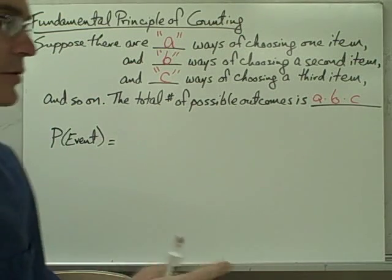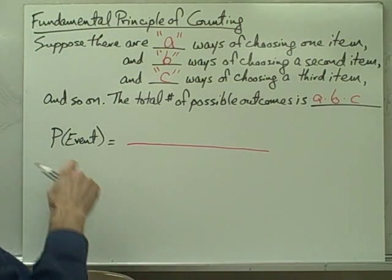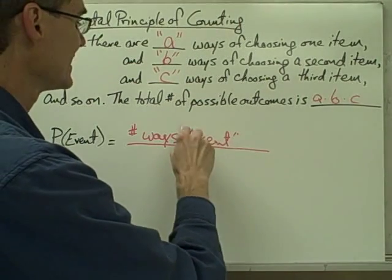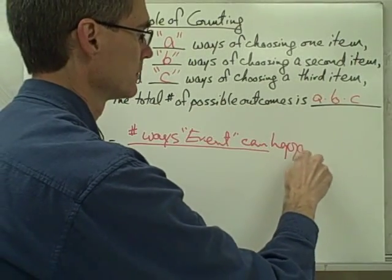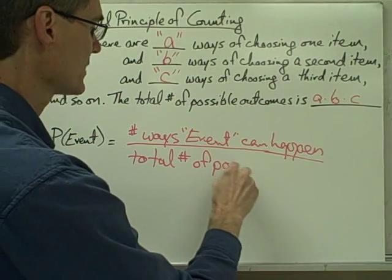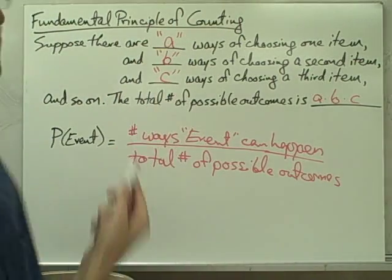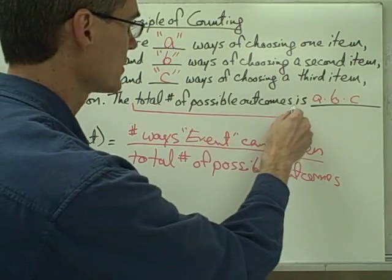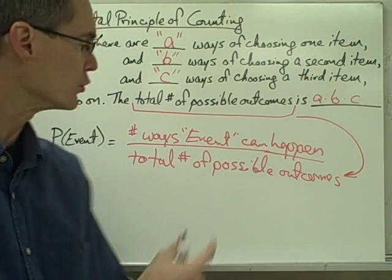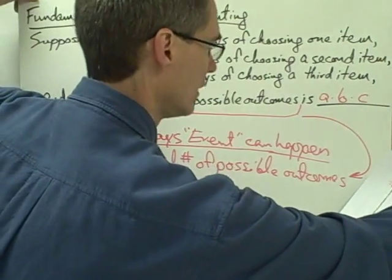Now, we're getting ready to talk about using the fundamental principle of counting with probabilities. Remember that the definition of the probability of an event is the number of ways the event can happen divided by the total number of possible outcomes. When we use the fundamental principle of counting, this total number of possible outcomes is what we calculate — so very often the fundamental principle of counting is used to find the denominator value in a probability calculation. Let's take a look at an example.